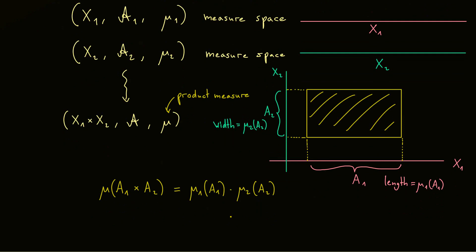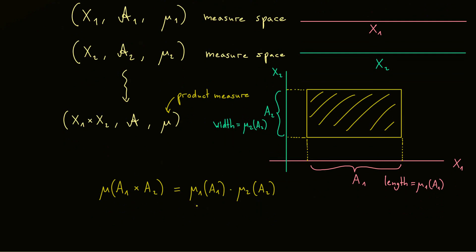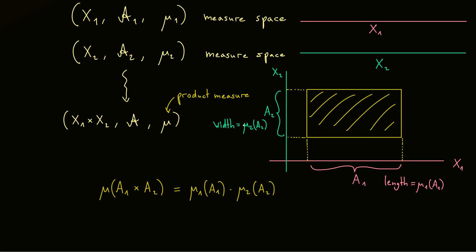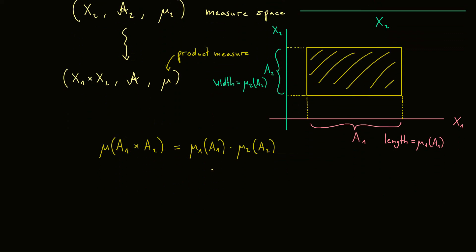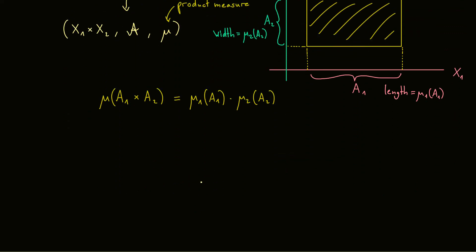Okay so this is what we want for the product measure. It should fulfill this formula for all rectangles formed by a measurable set in X1 and one in X2. However at this point we didn't talk about another ingredient here which is the sigma algebra A here. And this is what we can do now. And of course it is called the product sigma algebra.